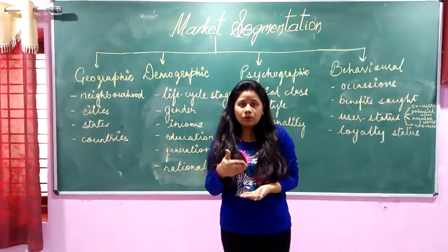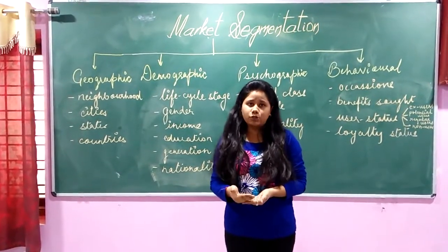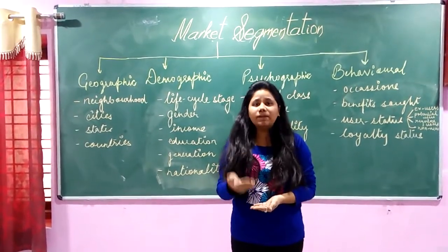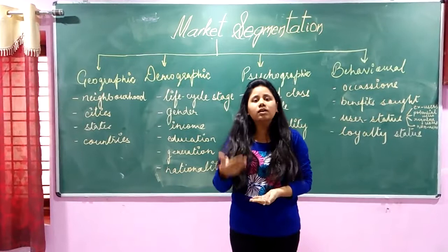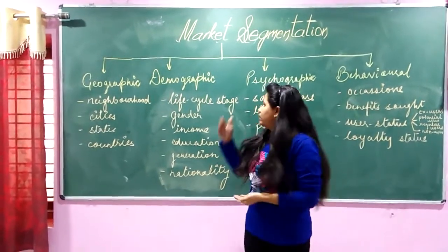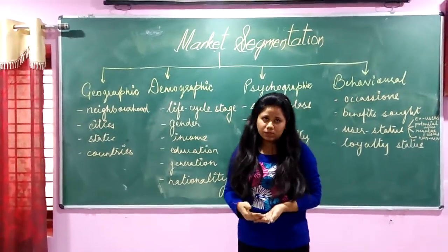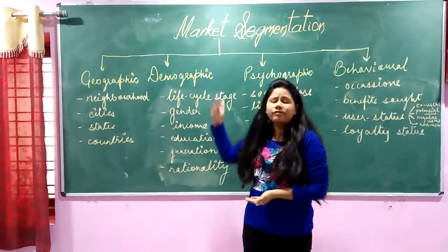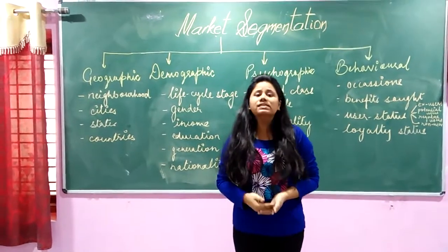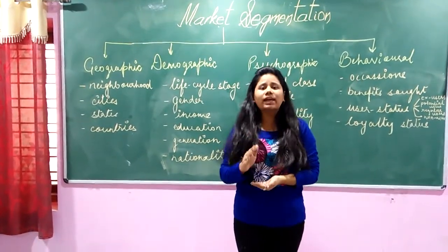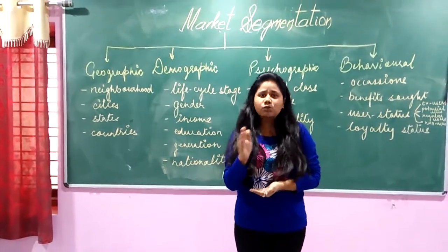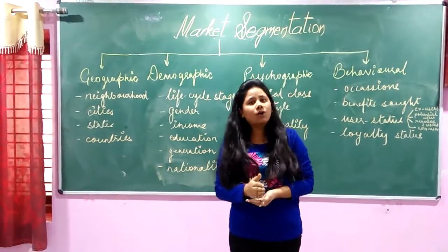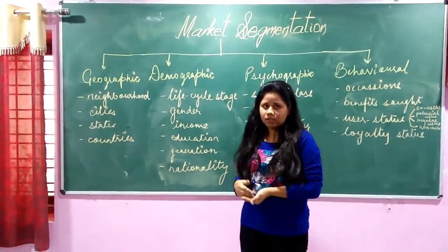Another example of life cycle stage segmentation is HDFC Standard Life Insurance, which focuses on pension schemes targeting older audiences. Then, for gender segmentation — a part of demographic segmentation — we can see examples like Farichandel Green, which categorizes products into males and females, defining their segments according to the gender characteristics of the market.